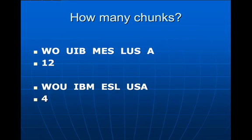Let's take a look at what we had there. How many chunks in the first one? Twelve, actually, because every letter is a single bit of information because the organization doesn't make any sense. But if you arrange them so they make sense—WOU, IBM, ESL, USA—suddenly, the 12 bits of information become four bits of information. And that's within our capacity to kind of look at and memorize.